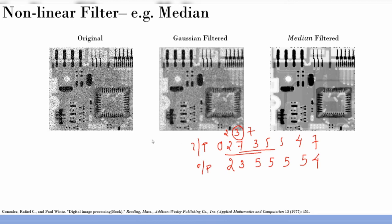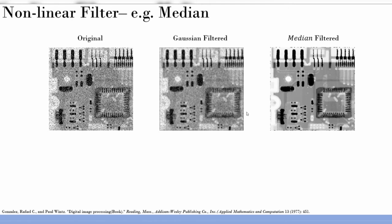Now imagine this happening in 2D with a 3×3 kernel: you sort all 9 values in ascending or descending order, pick the center value, and place it in that pixel — similar to convolution. The key difference is the non-linearity: since the result depends on the data values themselves, this is not a linear operation.